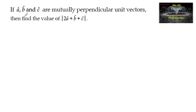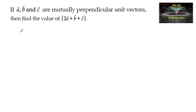If â, b̂, and ĉ are mutually perpendicular unit vectors, then find the value of |2â + b̂ + ĉ|. Since a, b, c are mutually perpendicular unit vectors, we can establish the following conditions.